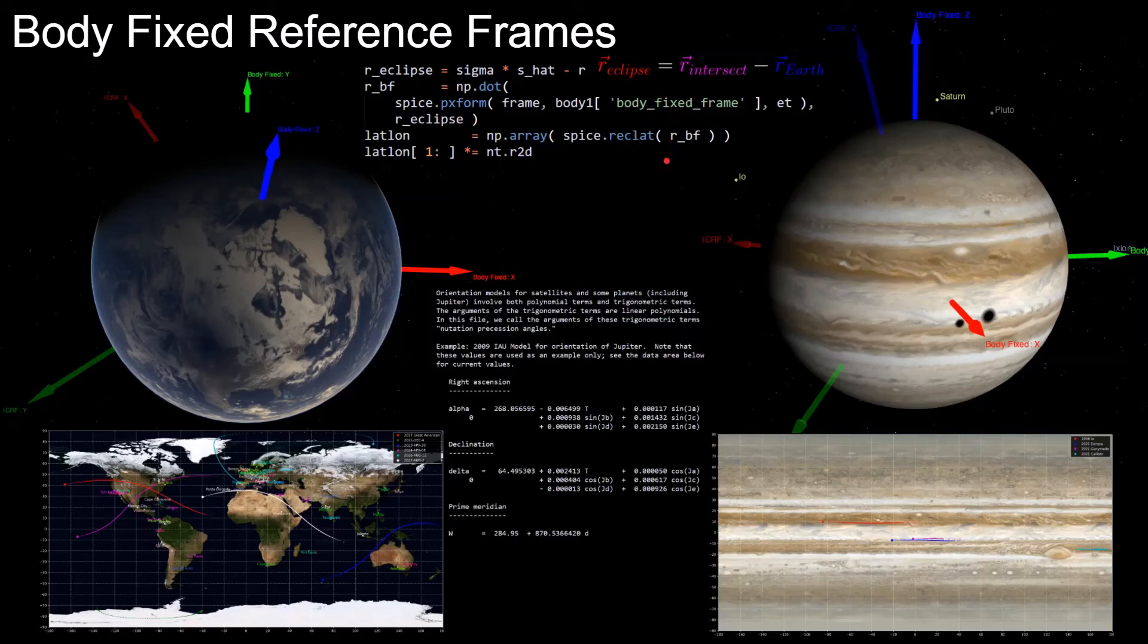And once we have this vector, we can convert it to latitudinal coordinates using spice's reclat function, which takes in a 3D vector and returns a magnitude, longitude, and latitude. And that's our final answer.